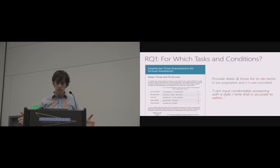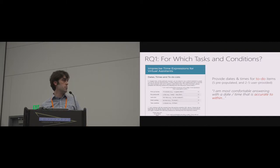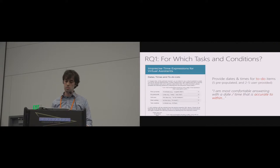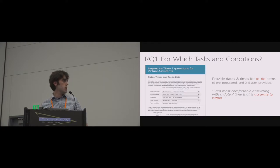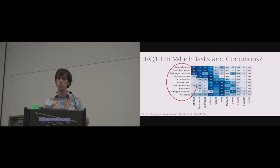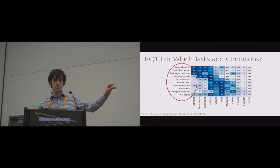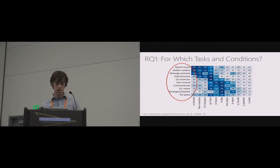In the second part of the survey, we asked people to provide date and time estimates for items in a to-do list — pre-populated with five random to-dos from prior work — plus two to five of their own items. We asked them to complete: 'I am most comfortable answering with a date or time that is accurate to within...' ranging from a minute to a few hours. When we grouped these to-do items by broad categories outlined by David Grouse, we found two general clusters.